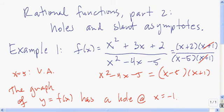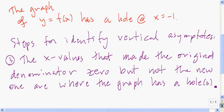I'll show you how to find the y-coordinate of the hole. Whichever x value cancels out — which no longer makes the denominator 0 — you have a hole there. I'm going to add a part 3 to the steps for identifying vertical asymptotes: the x values that make the original denominator 0 but not the new denominator 0 are where the graph has a hole. You can have multiple holes, just like multiple vertical asymptotes.